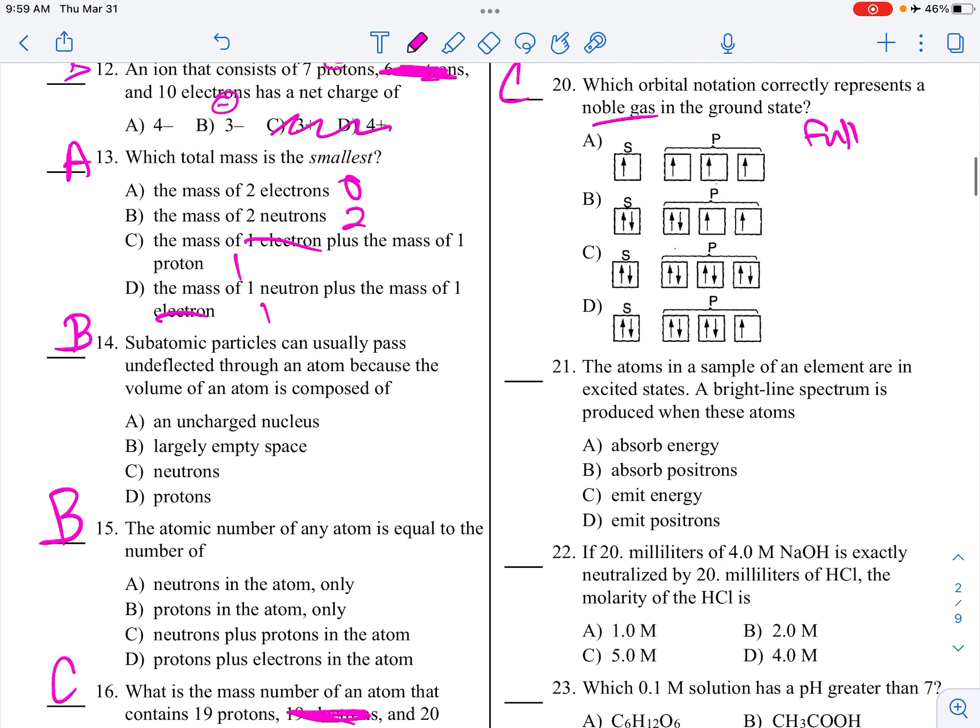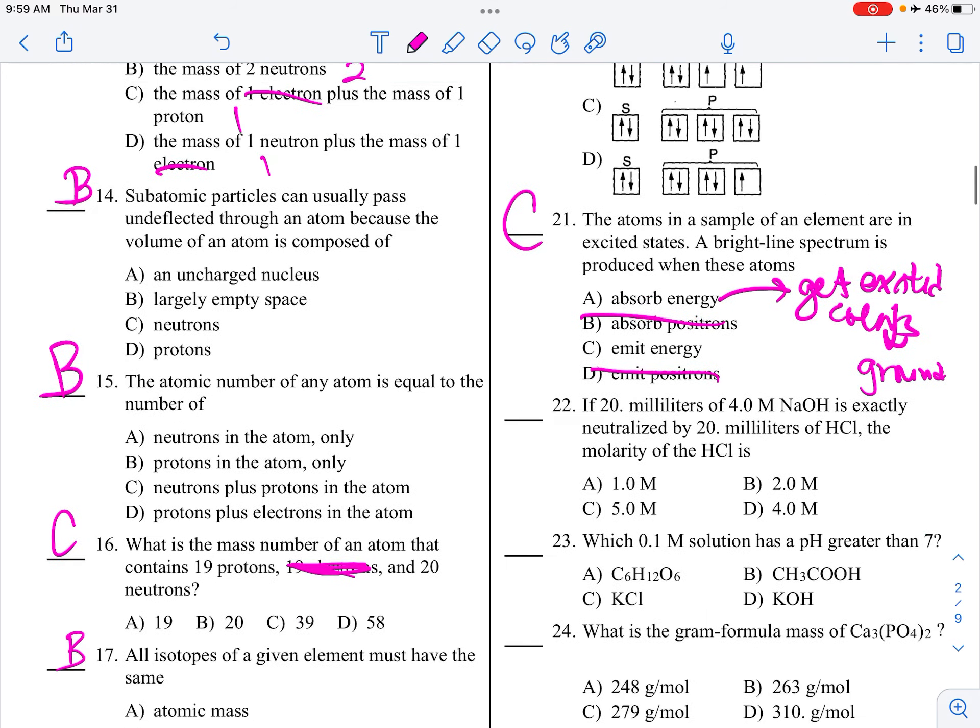The atoms of a sample of an element are in excited states. Brightline spectrum is produced from these atoms. Now, it has nothing to do with positrons. Do you see the spectrum when you absorb energy, or when you emit? It's emit. You have to absorb energy to get to the excited state, and then you go down to the ground, and you give off the colors. So, in order to get to the excited state, you have to absorb.